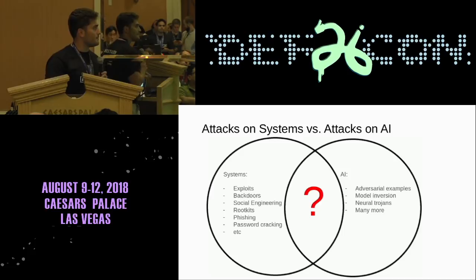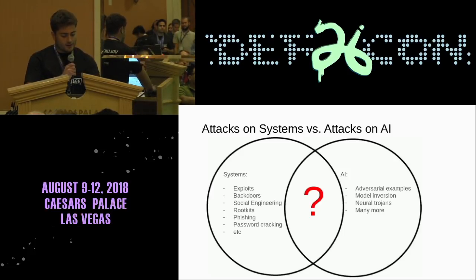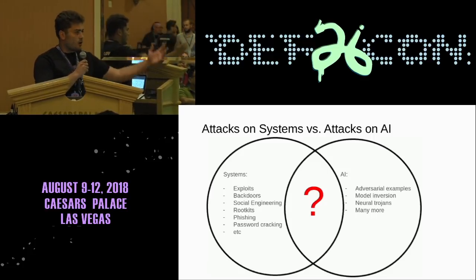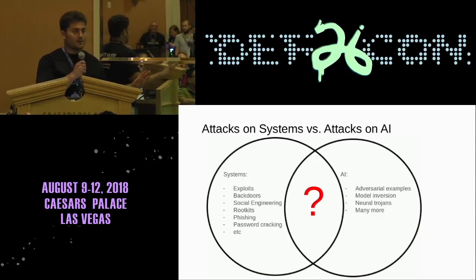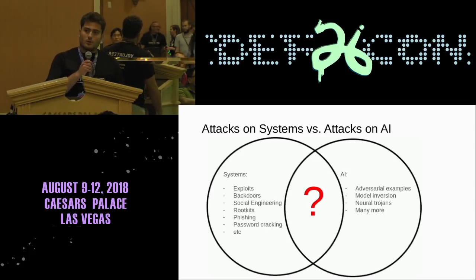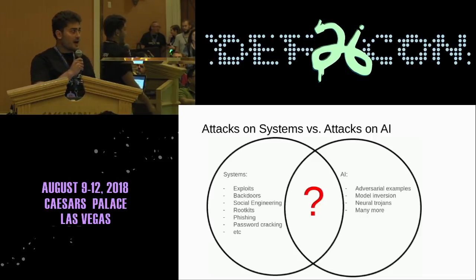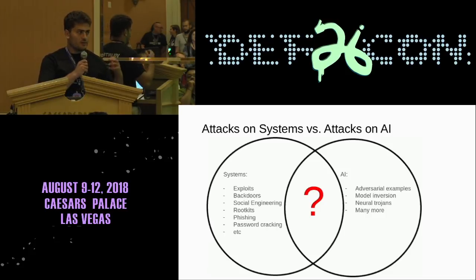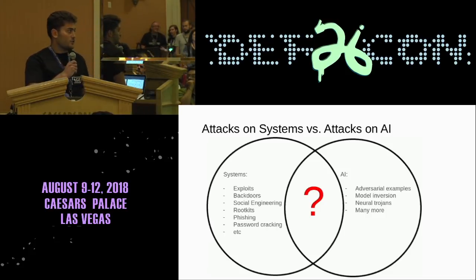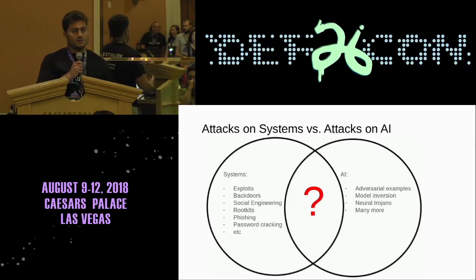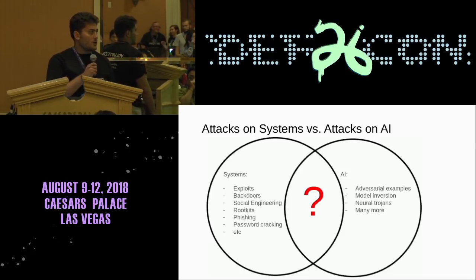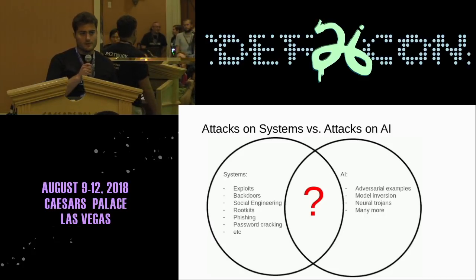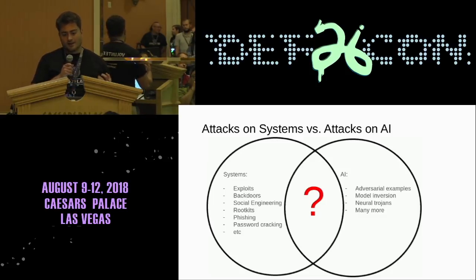If we look at different kinds of attacks people do on software, there are attacks on systems. A lot of times it's about getting the ability to run code on a victim system. There are all kinds of ways people do this and people talk about this all over DEFCON. In this village, however, we're concerned about AI systems in particular. We know about adversarial examples, model inversion and privacy issues, Trojan attacks on neural networks, and many more. So our question was: is there anything interesting about the case where you have an exploit, a backdoor, or anything into a machine learning system where you can run code on the victim system?